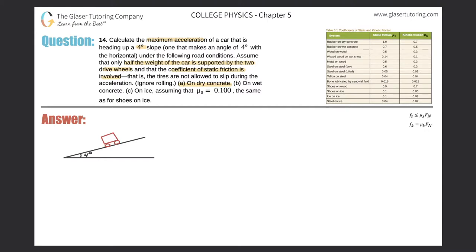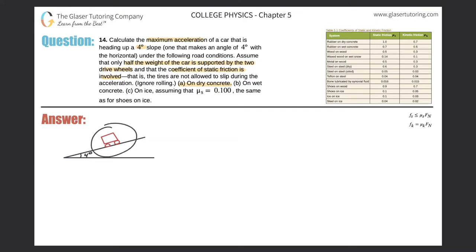So there are a few parts to this problem. We have to be very careful with what we're calculating and how we're dealing with this. So first thing is, we're trying to find a maximum acceleration. We're talking about forces here, so what formula are we eventually going to use? We're going to use the sum of the forces in the x-direction equals max in order to find that acceleration. In order to find the acceleration, I need to know the mass — they don't tell that to me, so most likely it should cancel somehow. And I need to really know the sum of the forces in the x-direction, so I need a free-body diagram.